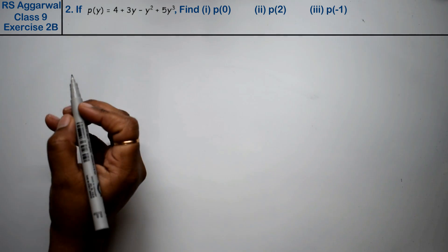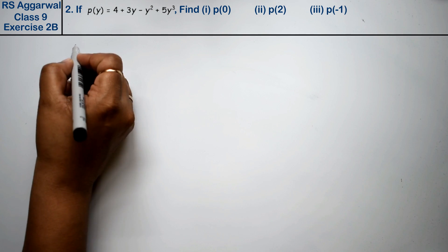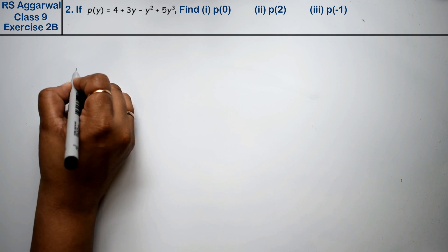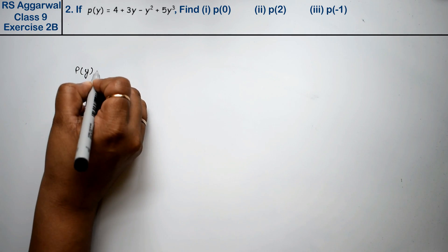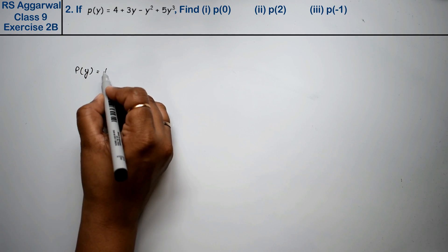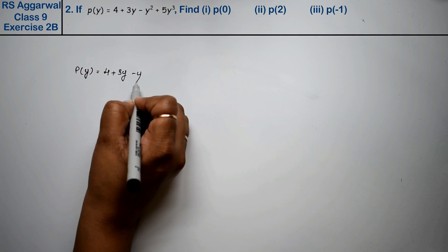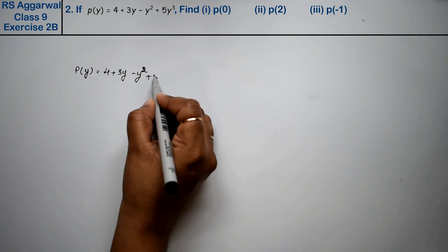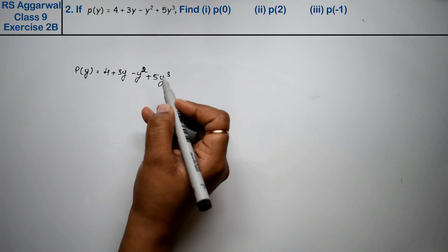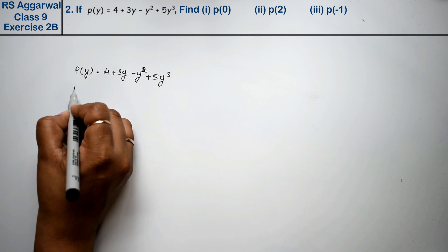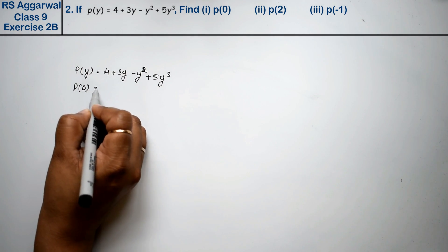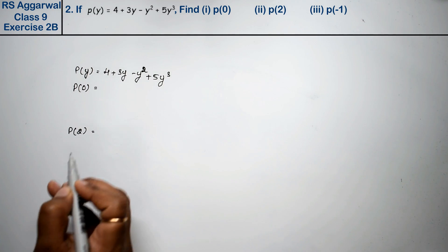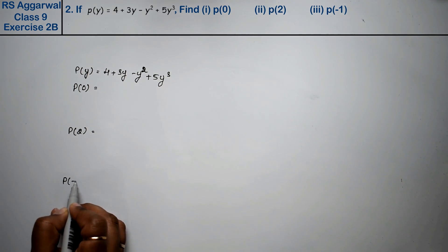Let's do question number 2 of exercise 2B, that is polynomials. Question number 2 is: if p(y) equals 4 plus 3y minus y squared plus 5y cubed, find first p(0), then p(2), and last one is p(-1).